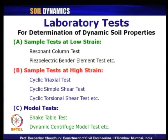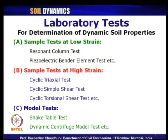Coming to the next major category — laboratory tests for dynamic soil property determination — we have seen the sub-classification of testing procedures: sample testing at low strain level, sample test at high strain level, and the third category is model test. Within category A, sample test at low strain level, we have seen different types of tests like resonant column test, piezoelectric bender element test. For sample test at high strain, we have seen cyclic triaxial test, cyclic simple shear test, cyclic torsional shear test. And for model test, we have seen shake table test, dynamic centrifuge model test.